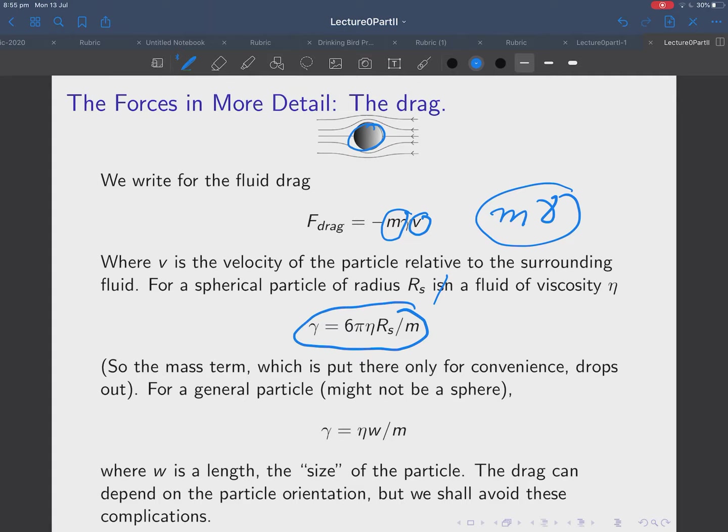Okay. So, for a spherical particle of radius R_S, in a fluid of viscosity eta, this thing, gamma, is given by Stokes drag. So, it's given by 6 times pi times the viscosity of the fluid times the radius of my sphere divided by the mass. Okay. As I said before, this mass term will drop out. Gamma M will be independent of mass. For a general particle, which might not be a sphere, you can always write gamma is equal to eta times W divided by M, where W is the size of the particle. All right. Okay.